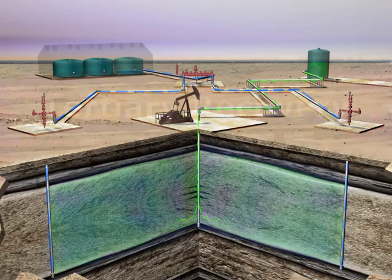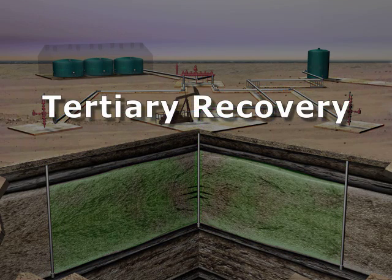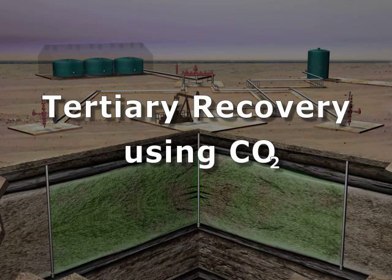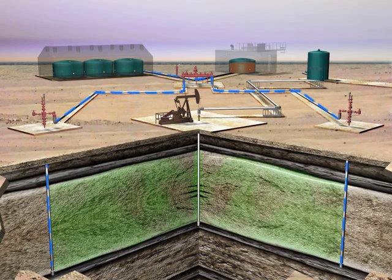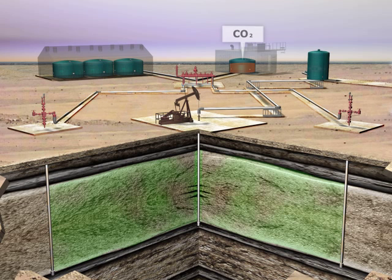Finally, tertiary phase technology utilizing carbon dioxide can be applied to further enhance water flooding. This cyclical process begins when water injection is temporarily suspended and replaced with the injection of large volumes of carbon dioxide.